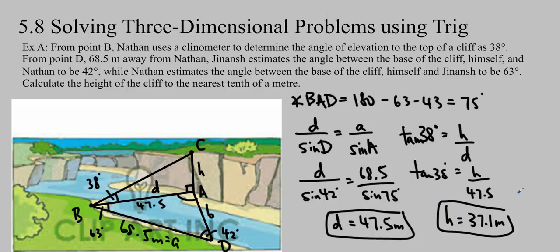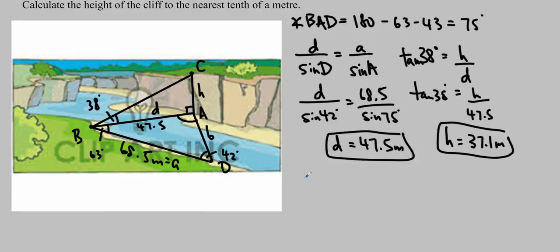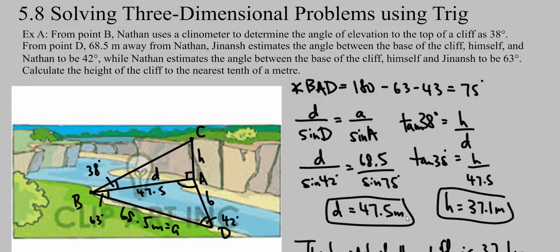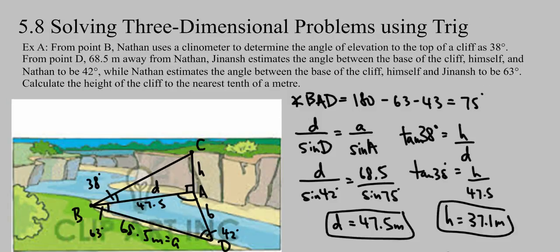So because it is a word problem, we're going to write a word solution. The height of the cliff is 37.1 meters. And it says to the nearest tenth of a meter. I'm just double-checking what my question is asking me. And I've answered it. So there we go. Okay, moving on to example B.